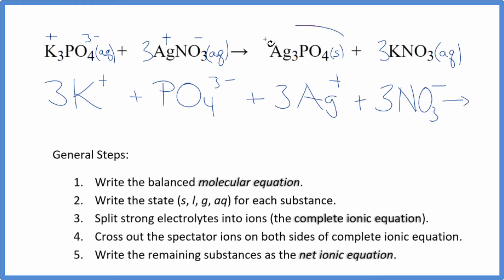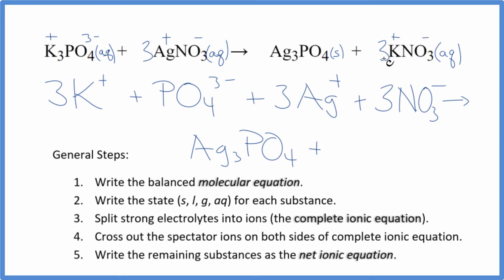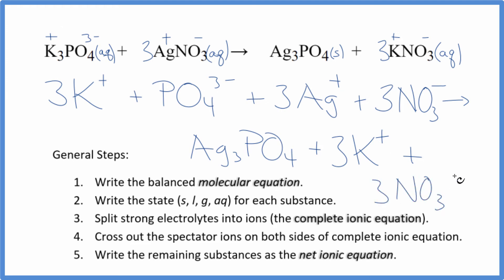For the products, we don't split solids apart, so we just have Ag3PO4. Potassium is positive and the nitrate ion is negative — three potassium ions, just like in the reactants, plus three nitrates, also like the reactants. So this is the complete ionic equation.